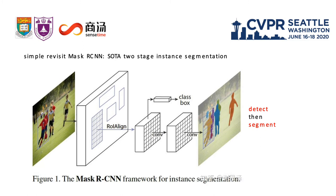Just a simple review of Mask RCNN, the state-of-the-art two-stage instance segmentation framework. It is based on the feature pyramid network, Faster RCNN, and adds a mask segmentation branch after the region proposal network. The key idea of Mask RCNN is detection first and then segmentation on each box.